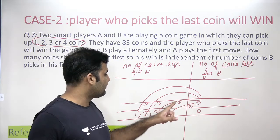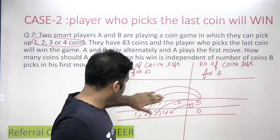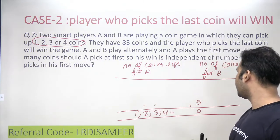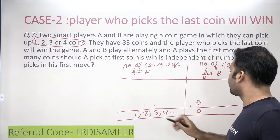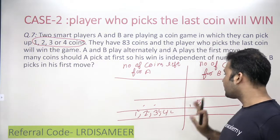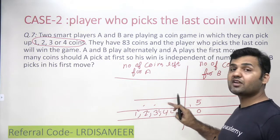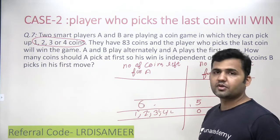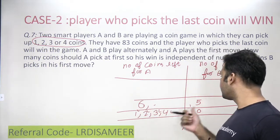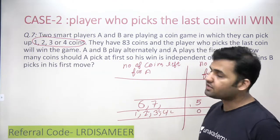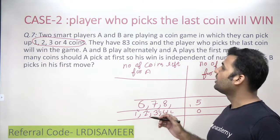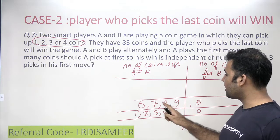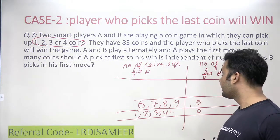Now what happens just before five? Five coins are on the table and A is leaving five coins for B. What coins should A have gotten so that whatever A picks, B is left with five? If A picks one, six coins should be on the table. If A picks two, seven. If A picks three, eight. If A picks four, nine. So if any of these numbers is available, A can manipulate the game by leaving five coins for B.